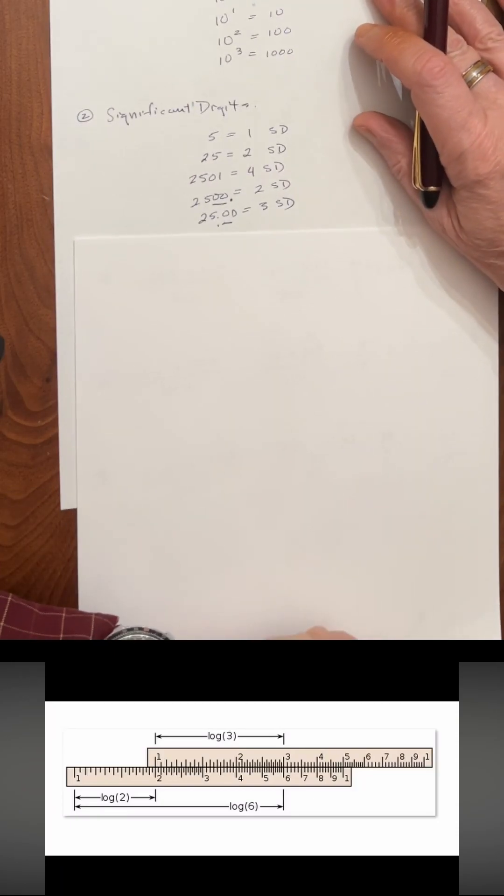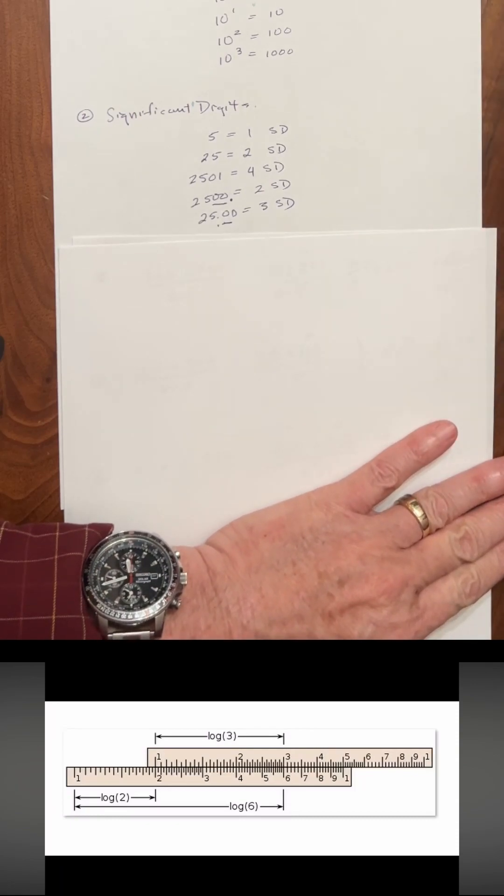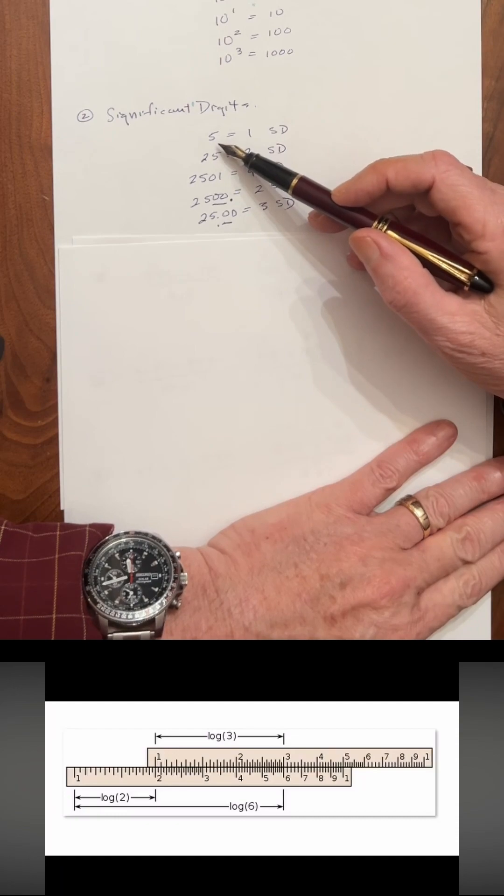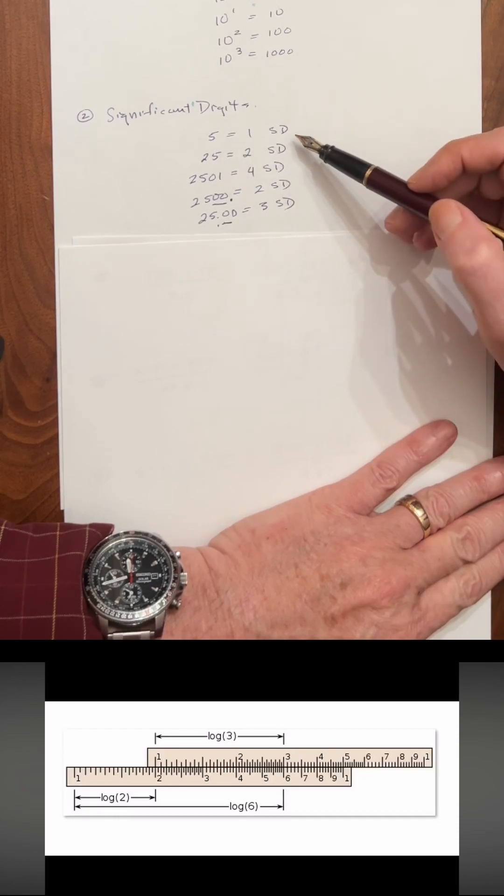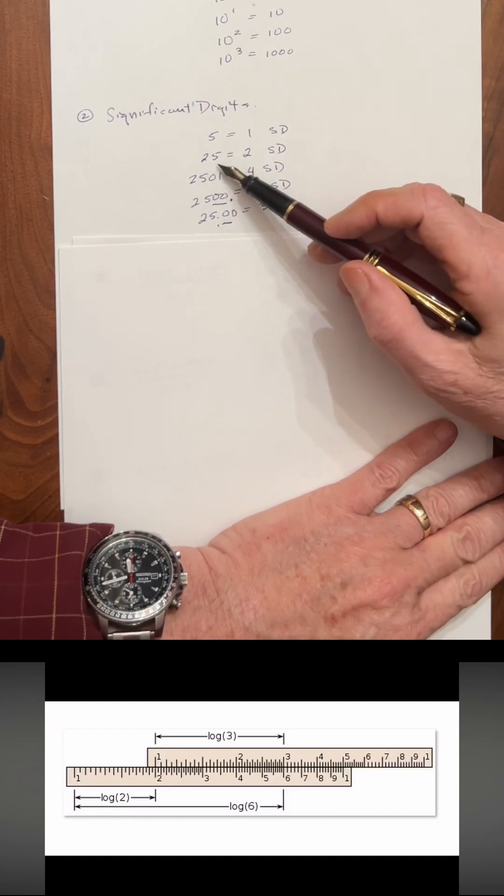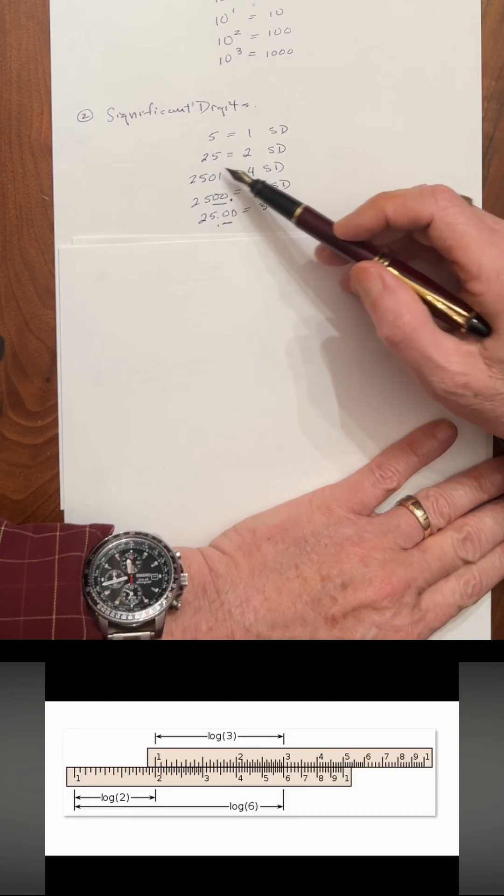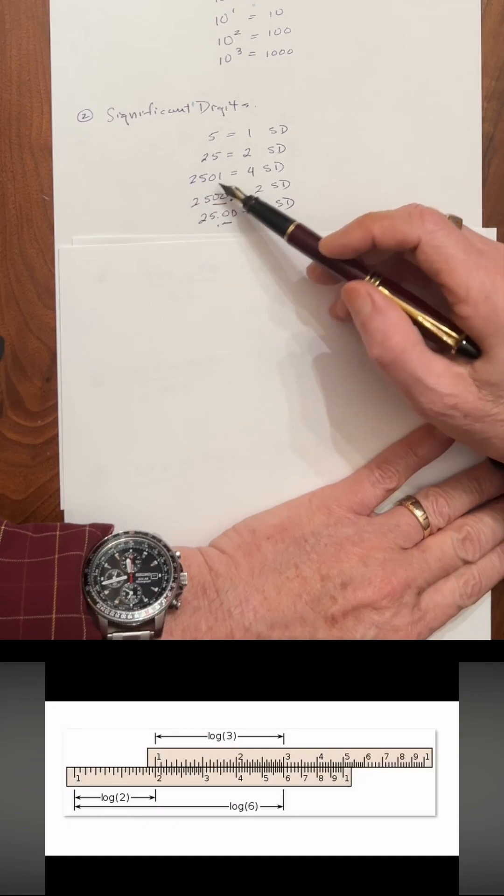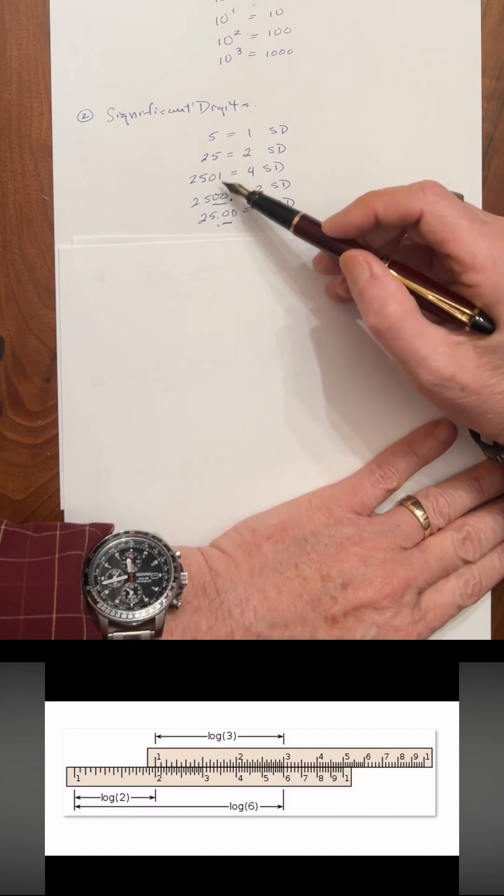The next concept I wanted to talk about was significant digits. If you have an isolated non-zero integer like 5, that's one significant digit. If you have two non-zero integers like 25, that's two significant digits. If you have 2501, you have four significant digits.